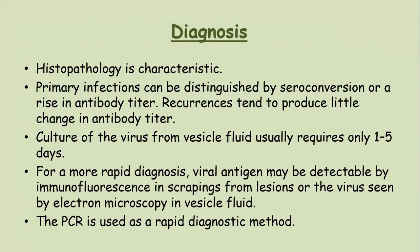Diagnosis: histopathology is characteristic; whenever in doubt, take a biopsy. Primary infection can be distinguished by seroconversion or a rise in antibody titer; recurrences tend to produce little change. Primary infection is usually characterized by high IgM and later increased IgG. Viral culture from vesicle fluid usually requires one to five days and is not routinely done. For more rapid diagnosis, viral antigen is detected by immunofluorescence in samples from lesions, and virus can be seen by electron microscopy. PCR is commonly done nowadays and is a rapid, highly sensitive diagnostic method.